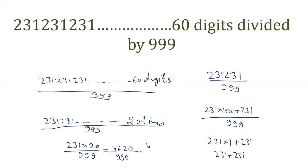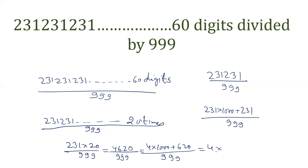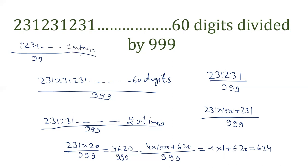For example, 231 repeating 20 times (a 60-digit number) divided by 999. The remainder when 4 is divided by 999 is 4. And 1000 divided by 999 gives remainder 1. And 620 divided by 999 is 620. So the final answer comes out to be 624. This approach can be applied when the repeating digits are divided by 99 or 999, for example 12341234 divided by 9999 a certain number of times.